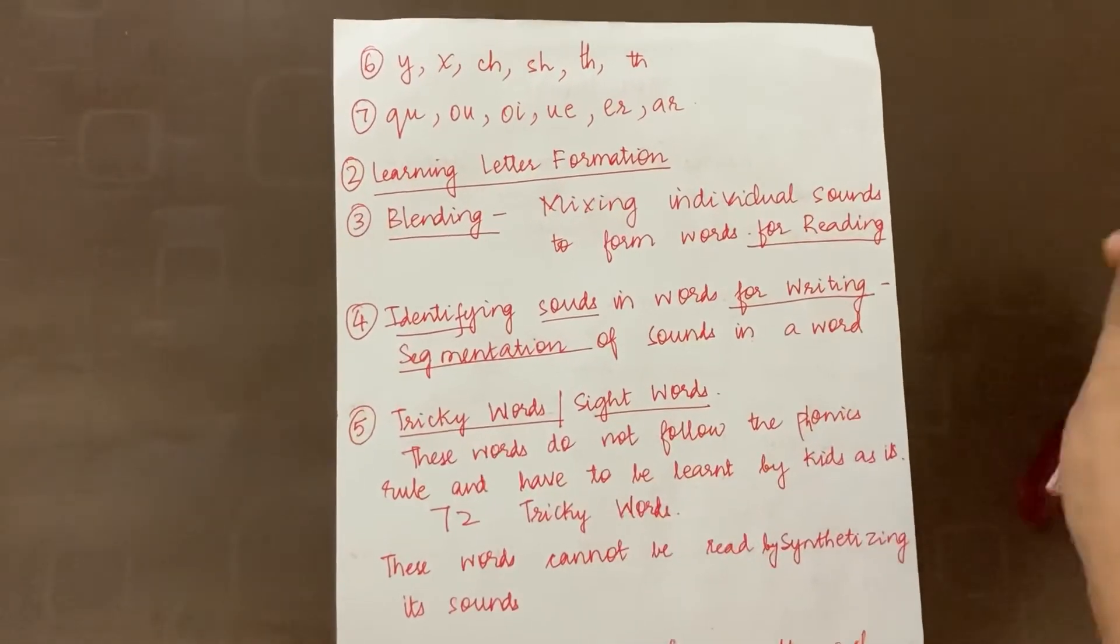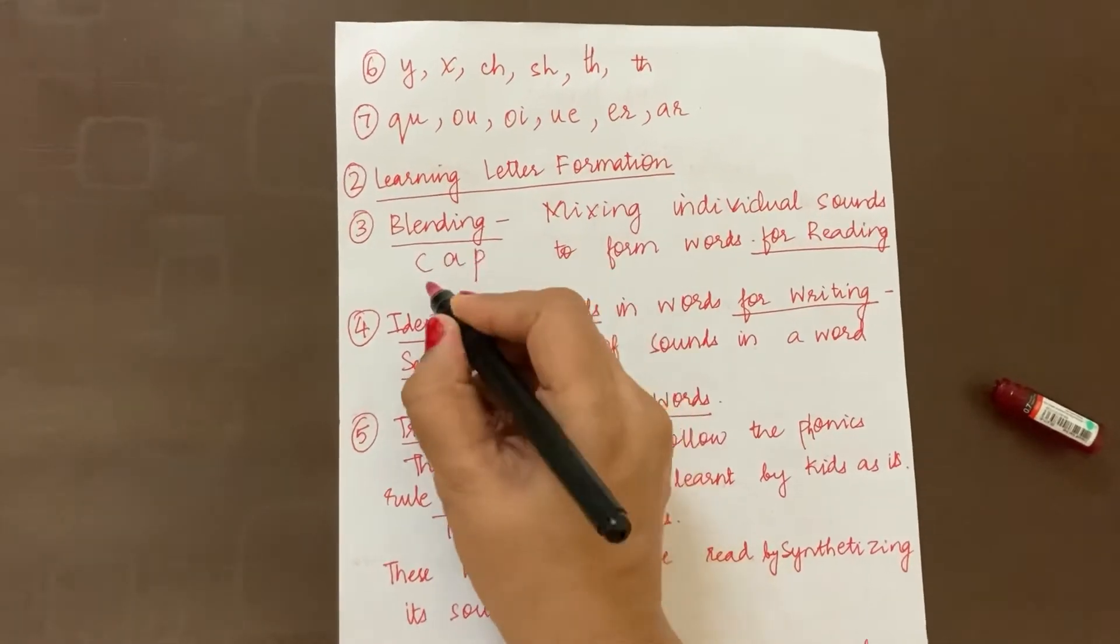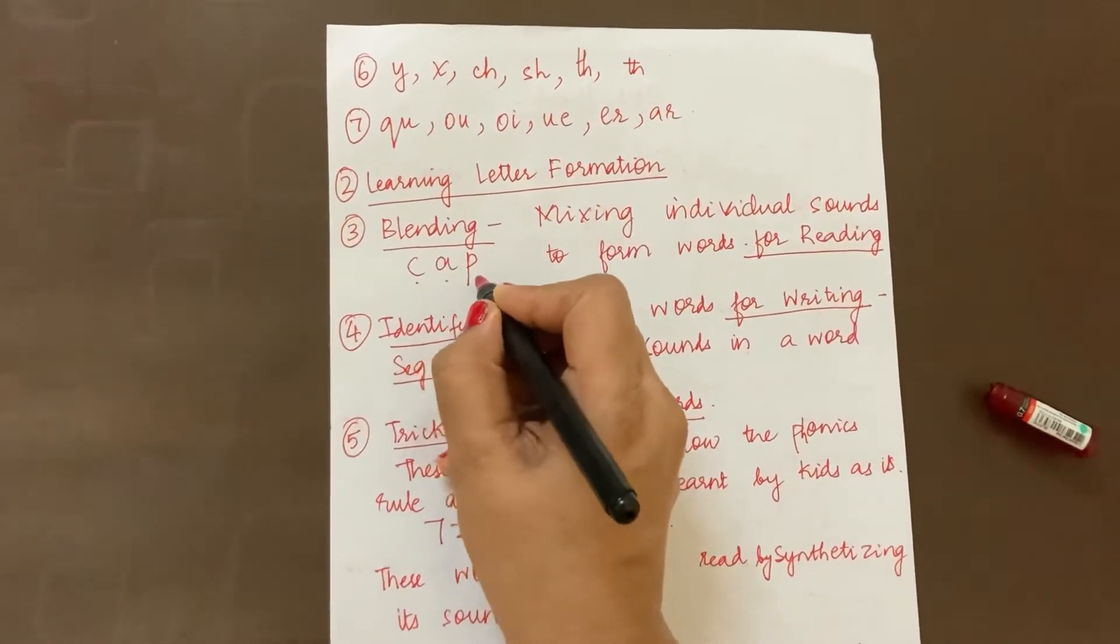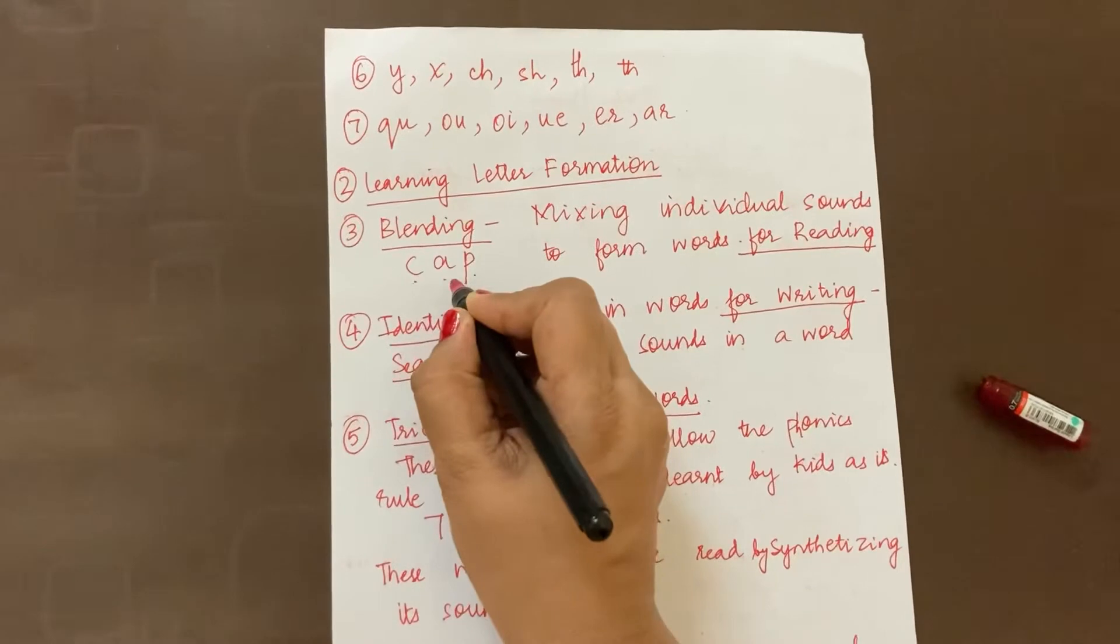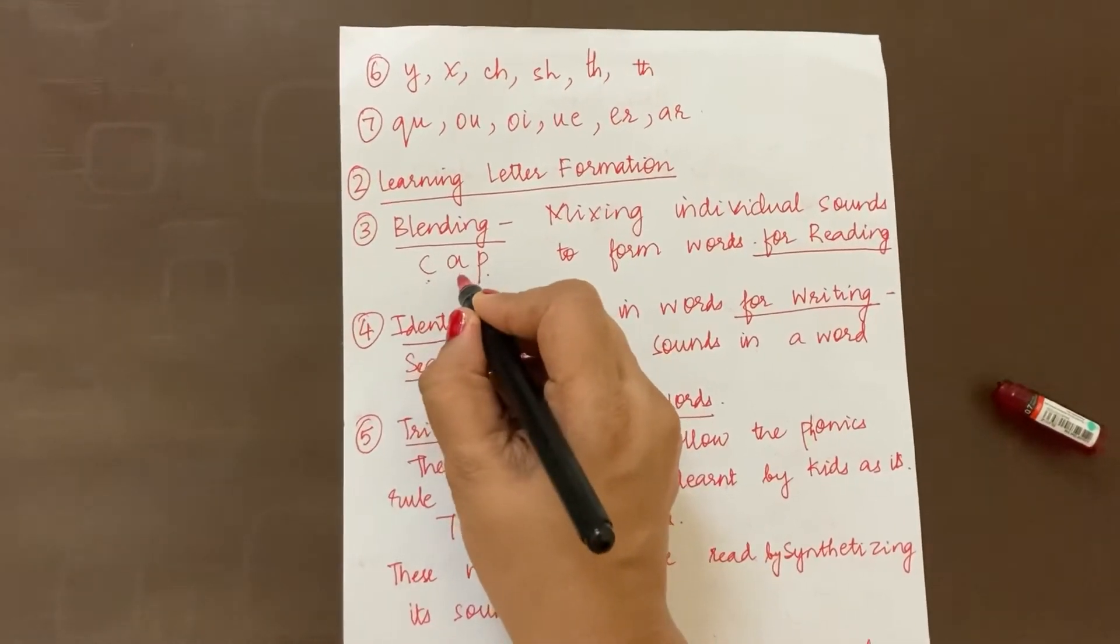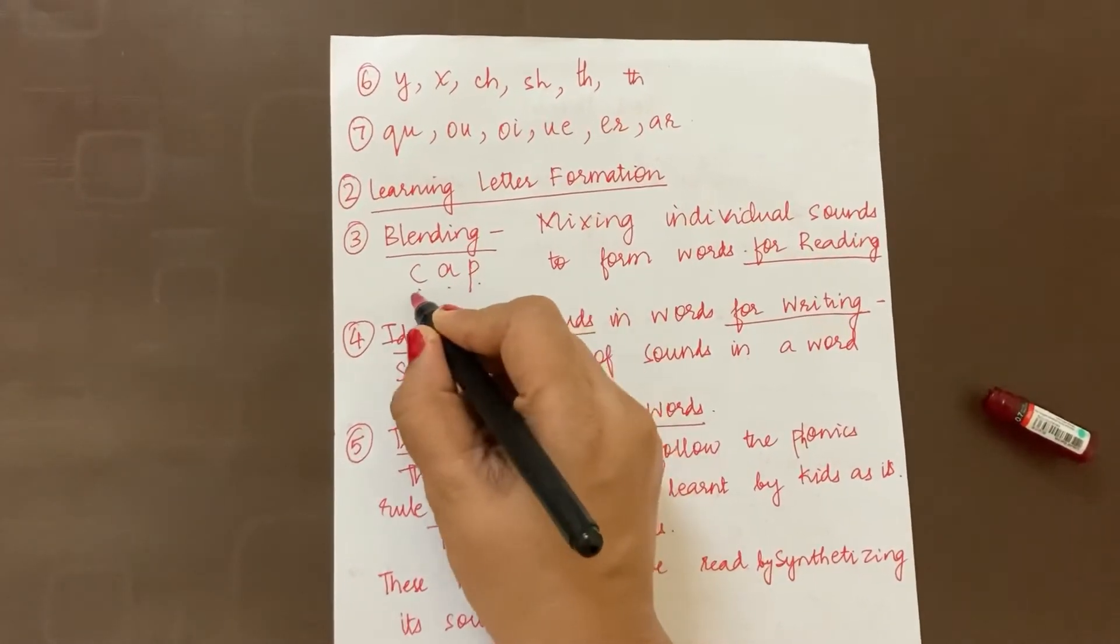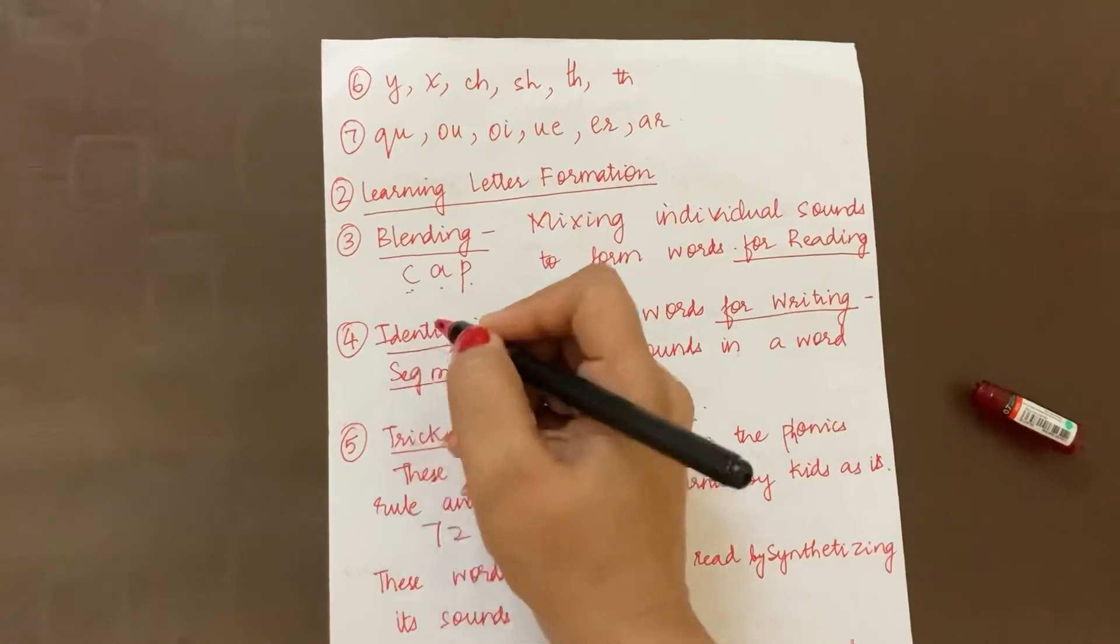So suppose we have the word K, Eh, P. So how is it taught? K, Eh, P. By mixing individual sounds. So C is K, Eh is Eh, and then we have P. So K, Eh, P makes cap. That way.